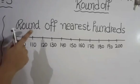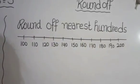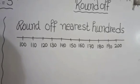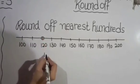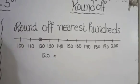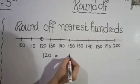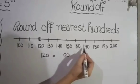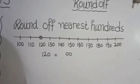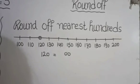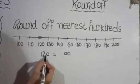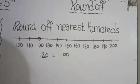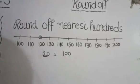Now we will do round off to nearest 100. If we have numbers from 100 to 200, we will round off the number 120. If we want to round off to nearest 100, write two 0s at the back. If we have numbers from 5 to 9 at the tens place, then add 1 in the hundreds place. But in the case of 120, the tens digit is 2, so there is no need to change the hundreds digit. We write 1 in the hundreds place, so 120 rounds to 100.